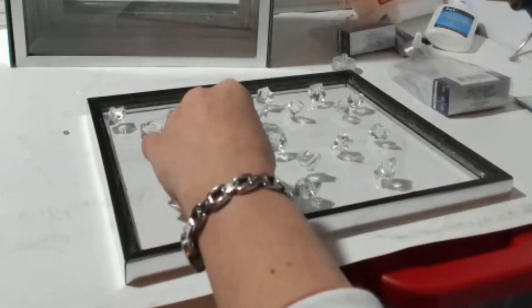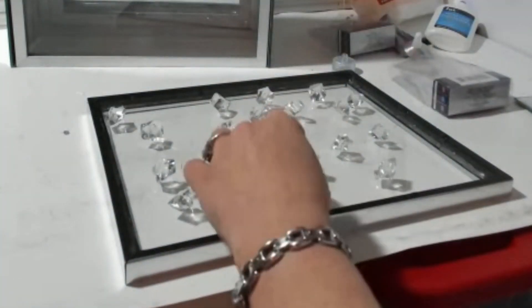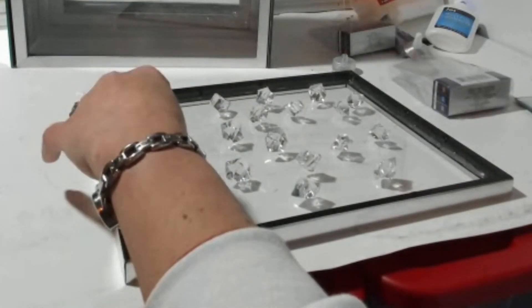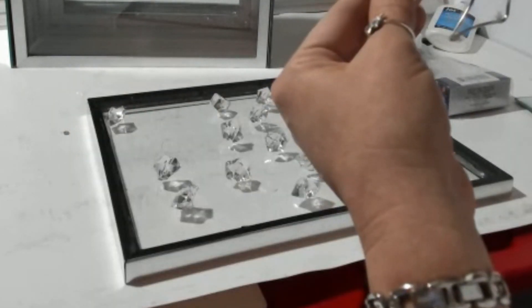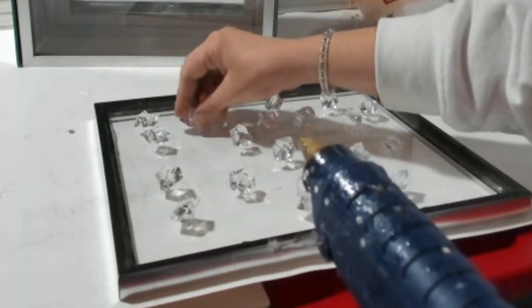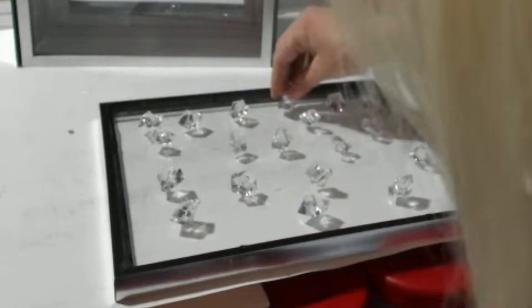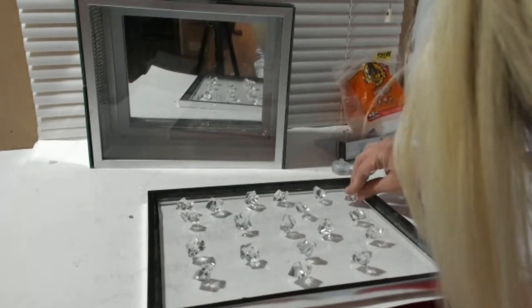I'm actually gluing these gems to that third glass picture frame that we had earlier in the video. This is it and it's face down. The picture frame is face down so I'm gluing the gems actually to the back of the glass and then we'll put that together here in just a moment and see what it looks like.